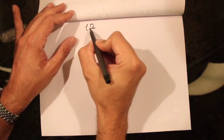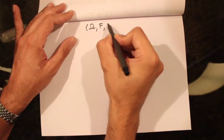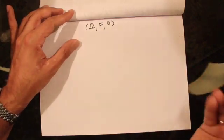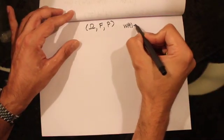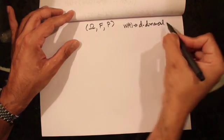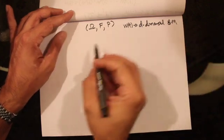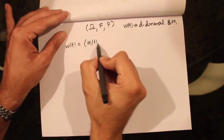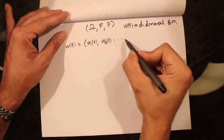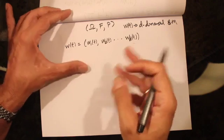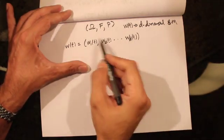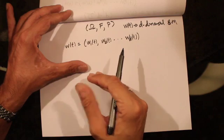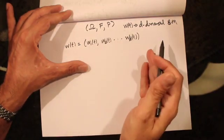Let's assume that we have a probability space given by capital omega, a sigma algebra, and a probability measure. Defined on this probability space, we're going to have a d-dimensional Brownian motion W_t, which we can write as a vector of components W_1t, W_2t, all the way to W_dt. Each one of these is a one-dimensional Brownian motion, and as discussed in previous lectures, these individual components are independent of one another.